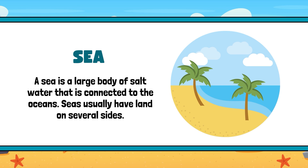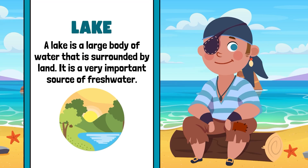A sea is connected to the oceans and usually has land on several sides. The next one is the lake. A lake is a large body of water that is surrounded by land. It is a very important source of fresh water.